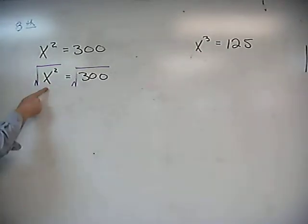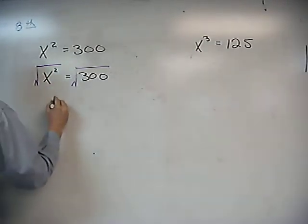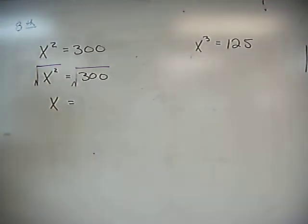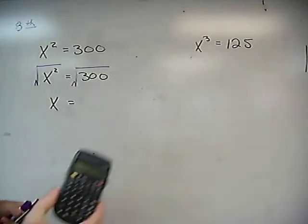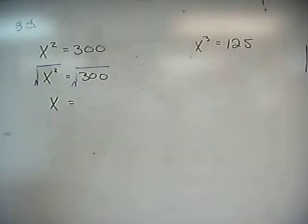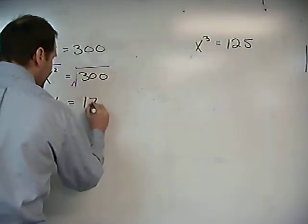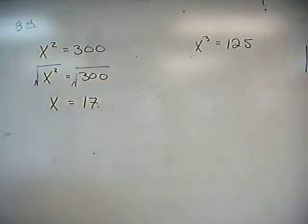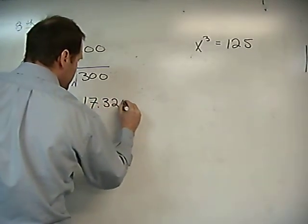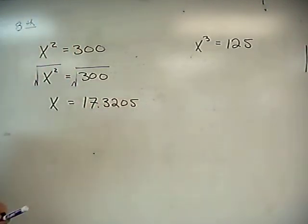Square root of x squared is going to give us x. Square root of 300, that's going to be a calculator problem. We are going to put in 300, we are going to put in square root and we are going to get something that looks like this. So I am going to go ahead and write it up here: 17.3205.